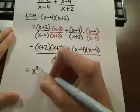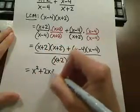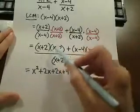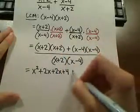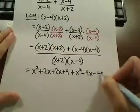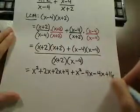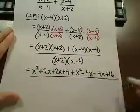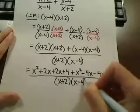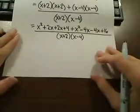So this is going to be x squared plus 2x plus 2x plus 4, when I foil the first one, foiling the second one is x squared minus 4x minus 4x and plus 16. And this is all over our LCM.